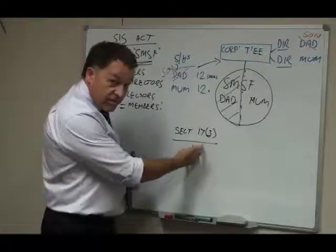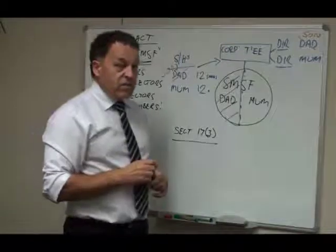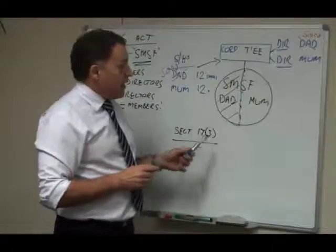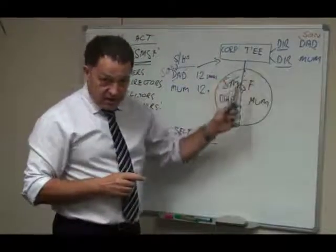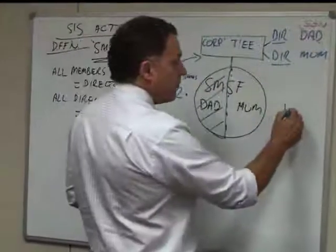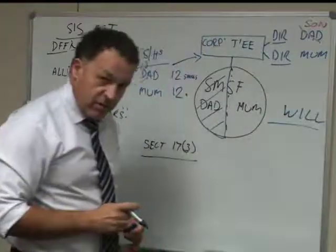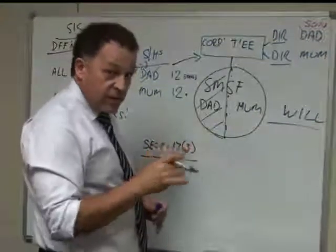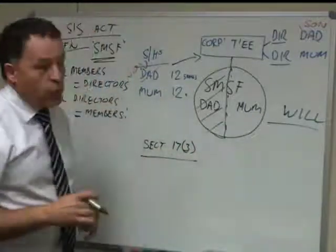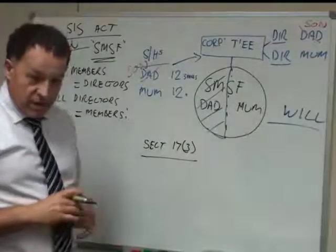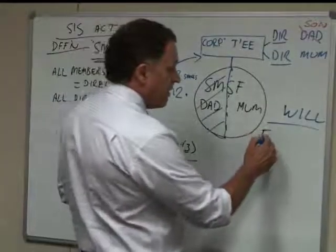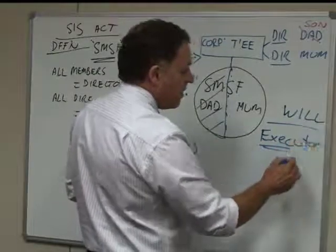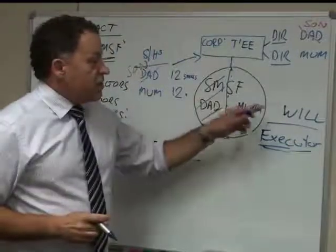The law then also provides that in those circumstances, it's possible for the legal personal representative of Dad to step in as a director. Now, how does that happen? Well, first of all, Dad will have a will. And if he hasn't got a will, he should have a will. And this is a very good example why he needs one. Under Dad's will, he will have made provision for whom his legal personal representative will be, and that's typically the executor. So the executor is determined by Dad's will.